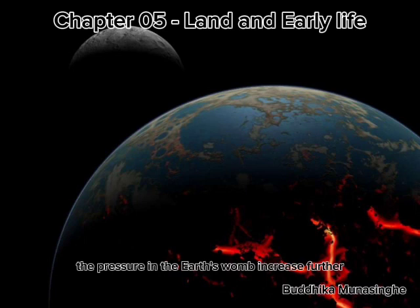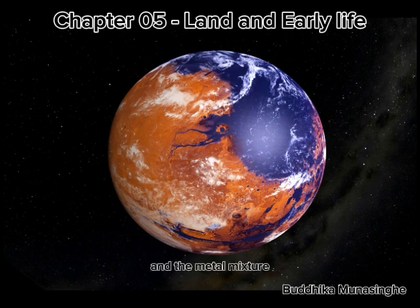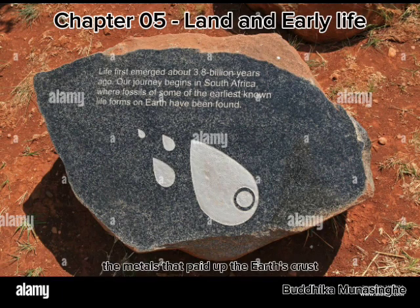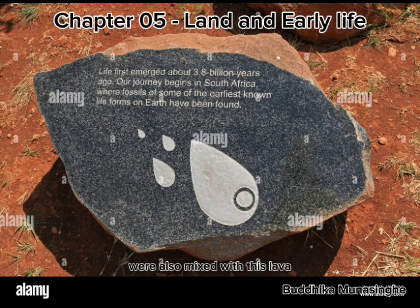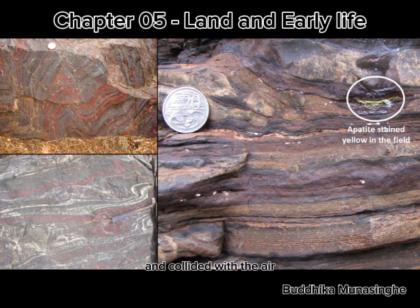Gradually, the pressure in the earth's womb increased further. At the bottom of the ocean, the thin layers burst and the metal mixture that was inside the womb flowed out. The mixture flowed as lava and settled on the ocean floor. The metals that made up the earth's crust were also mixed with this lava. For millions of years, this action continued, exposing the ocean to the surface and collided with the air.